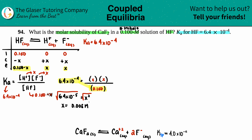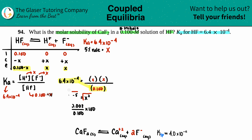Now let's check the 5% rule: take x divided by the initial concentration (0.100) and multiply by 100. We get 8%, which is higher than 5%, so it does not pass the 5% rule. That means we have to go back and keep the −x in the denominator.